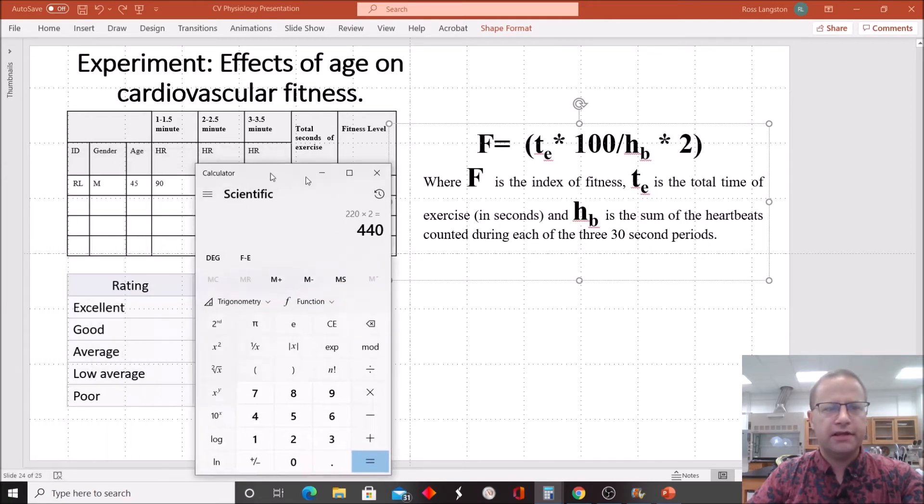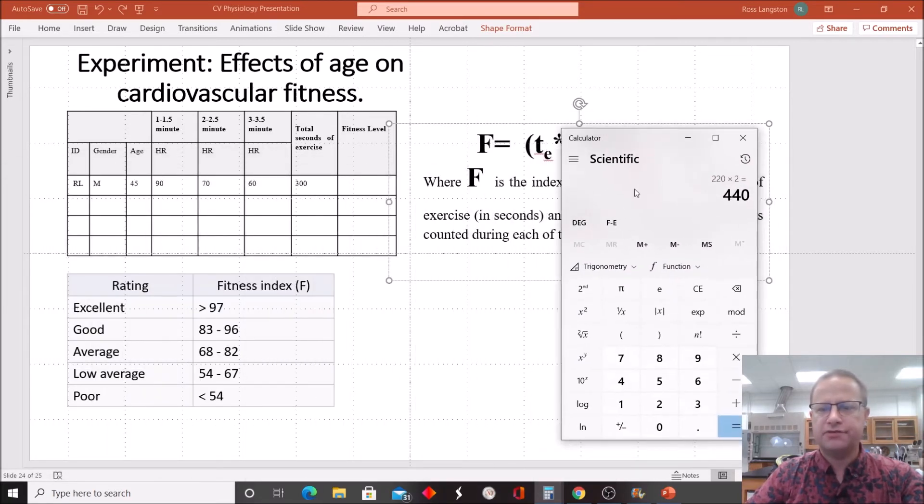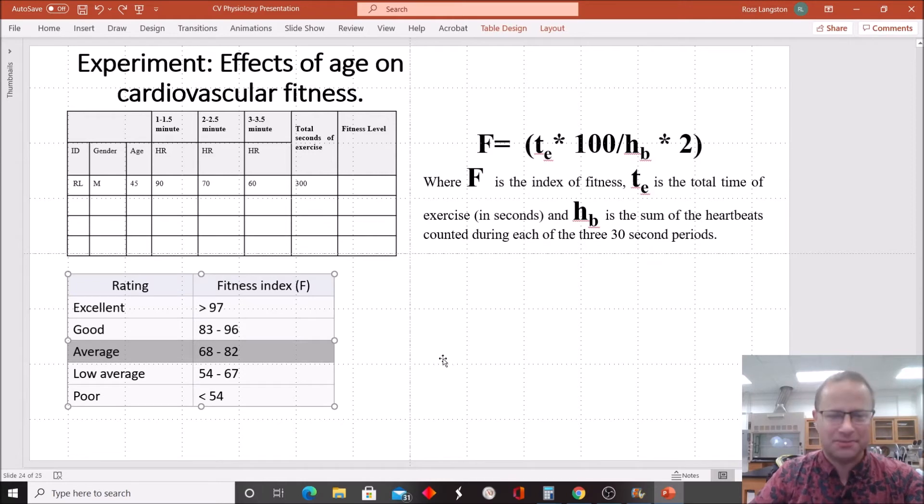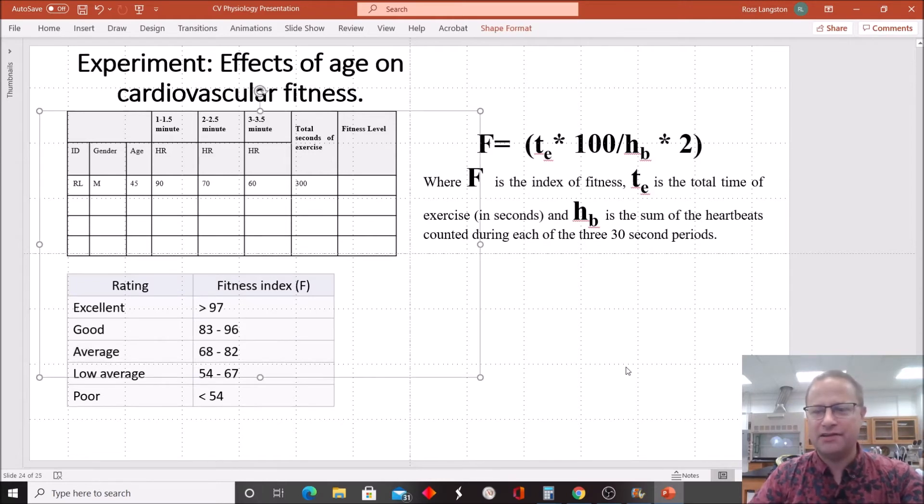So 440 is our denominator, and remember what was our numerator again? That's right, it was 30,000. So 30,000 divided by 440 equals 68. And if I go down here at the chart, I can see that 68 is the lower end of average. So I'm average, that's awesome. I'm happy to be average at my age.